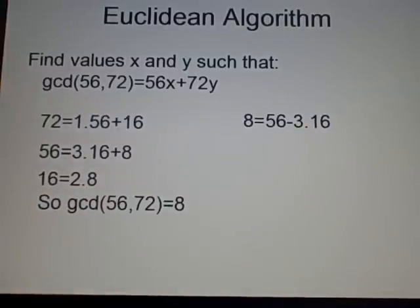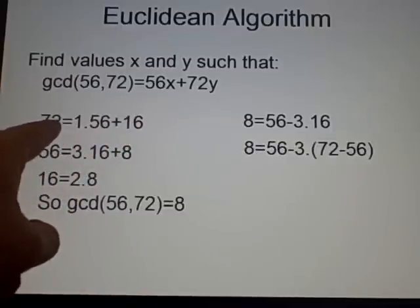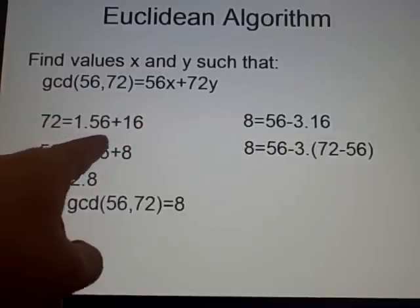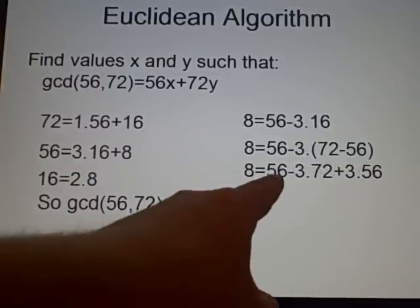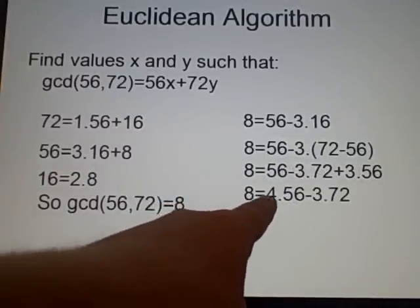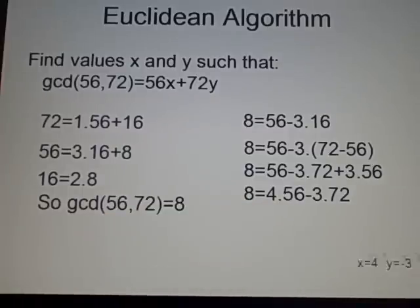Now, we can cancel this down a bit more as well, because we've got 16 here. So, if we just have 3 times 72 minus 56, and then if you times this out, then you'll get this. And that will give you 8 is 4 times 56 minus 3 times 72, so our x is 4 and our y is minus 3.